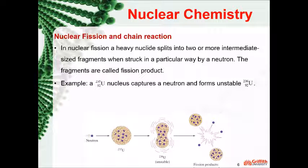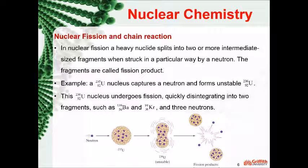Let's look at a typical fission reaction example. A uranium-235 nucleus captures a neutron and forms an unstable uranium-236. The unstable uranium-236 nucleus undergoes fission quickly disintegrating into two fragments such as barium and krypton, as well as three neutrons.